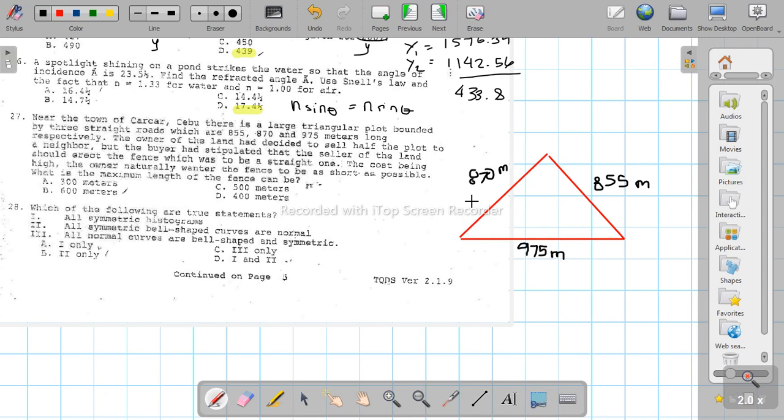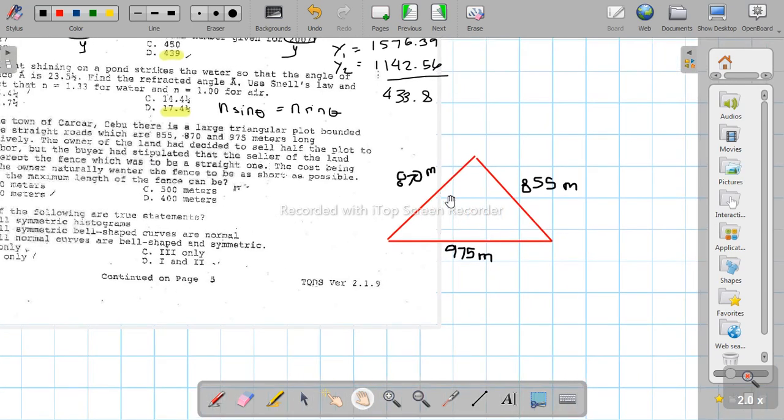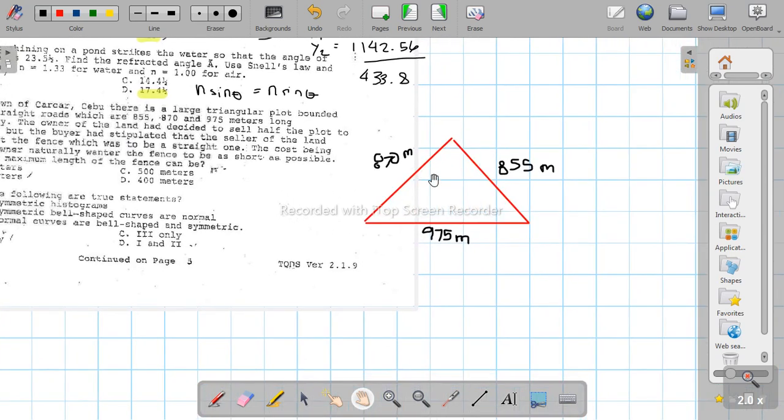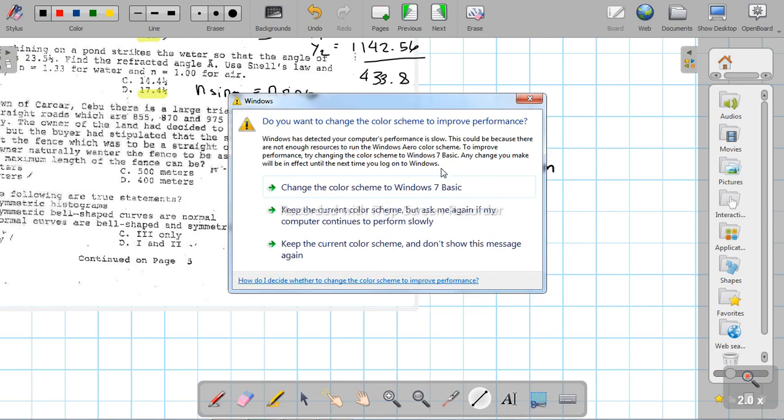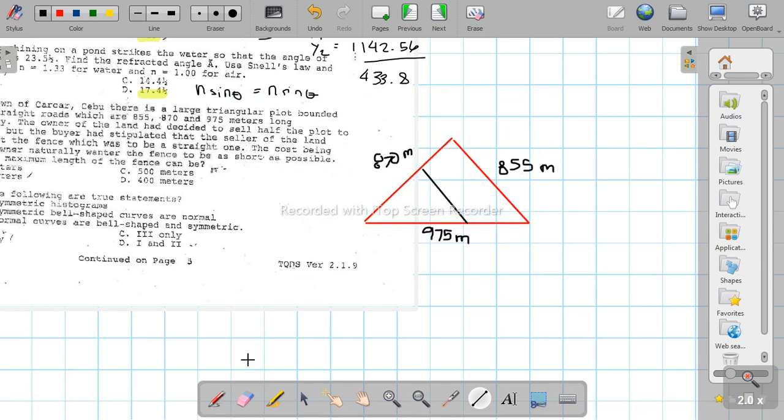We need to divide it in half. So whatever the area is here, half is on one side. The division should be a line segment parallel to the shortest side. This is where we'll put the fence, which we'll call X.